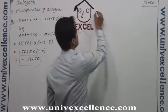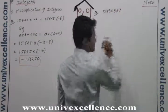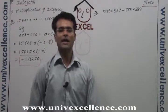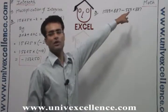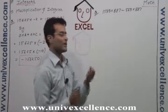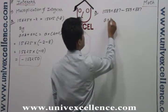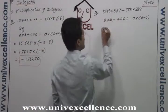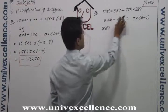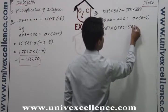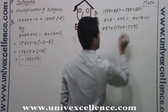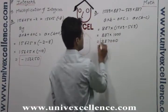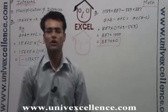Same type of question: 1569 into 887 minus 569 into 887. Here 887 is common, so we use the distributive property. A into B minus A into C equals A into (B minus C). So we write 887 multiplied by (1569 minus 569), which is 887 into 1000. The answer is 887000. This is the use of the distributive property for integers.